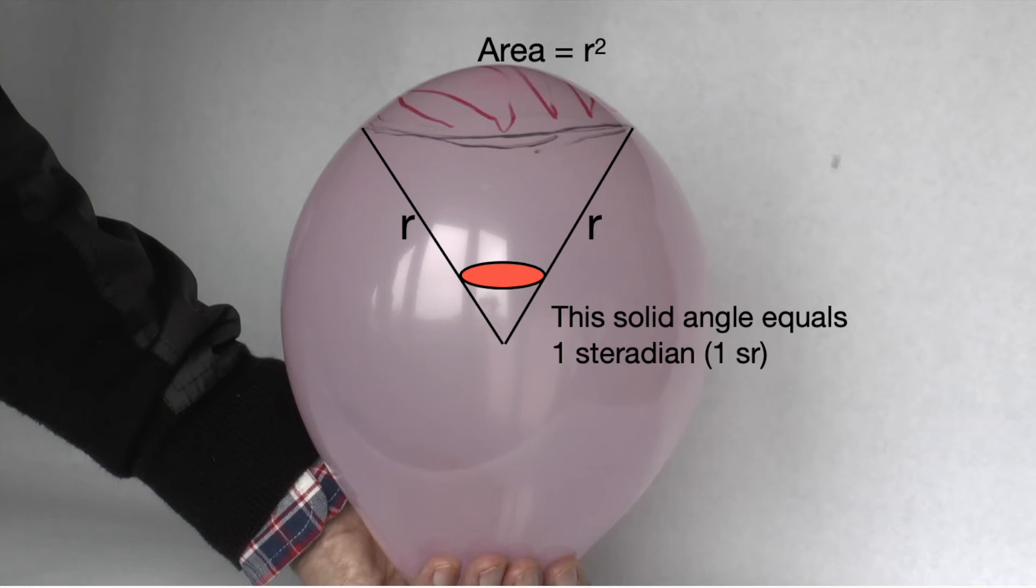And since the sides of this cone are radius r and the area is r squared, this solid angle is equal to one steradian or 1 sr. And that is in effect the definition of a steradian.